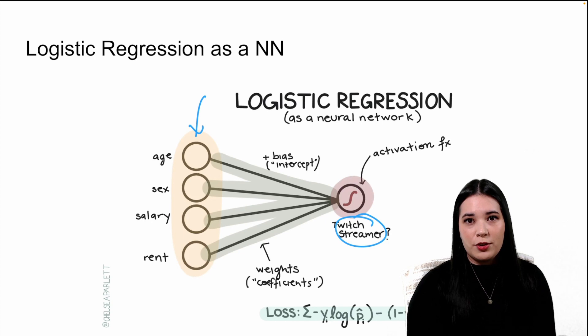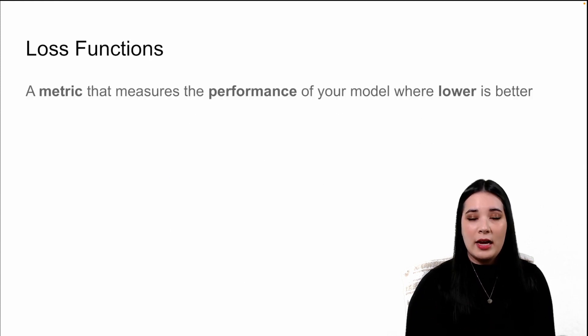The architecture of your neural network determines the structure of your model. The loss function determines how you measure the performance of that model. As a reminder, loss functions are metrics that measure the performance of your model where lower values mean better model performance.